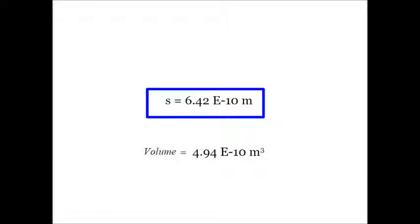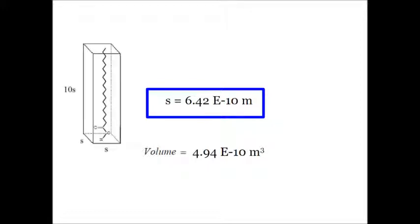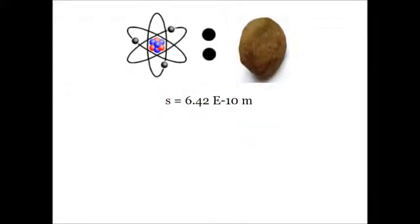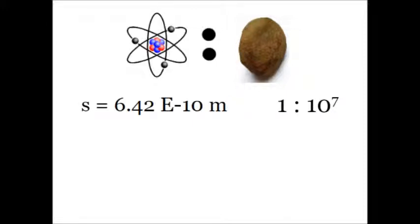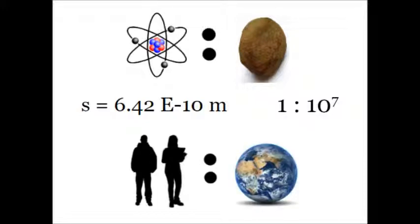We found S. What is S? S is the dimension of the molecule. S answers the question: how big is an atom compared to a grain of sand? If we consider that a grain of sand is about a millimeter in each direction — about a millimeter cubed — then the grain of sand is seven orders of magnitude bigger than the atom. Fun fact: the Earth is about seven orders of magnitude bigger than you are.